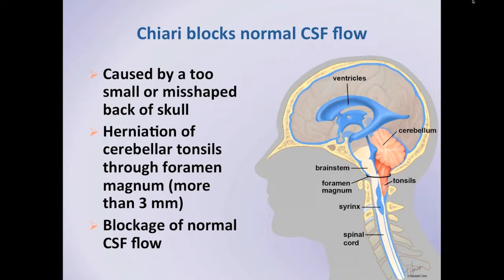In general, the skull fails to develop with enough space to accommodate the cerebellum and tonsils. The tight corridor forces the tonsils to herniate into the upper part of the spinal canal, resulting in obstruction to the flow of spinal fluid. This is a spectrum of disorders that ranges in anatomic severity, but the basic principle is that CSF flow from the brain to the spine is altered by the malformation in such a way that symptoms can develop.